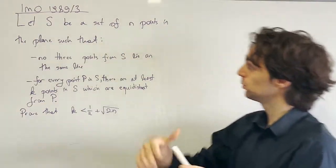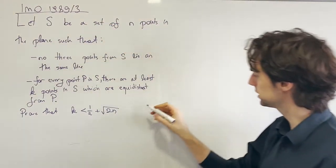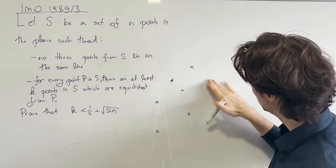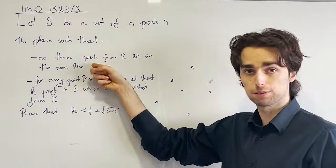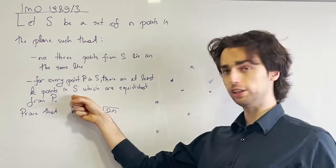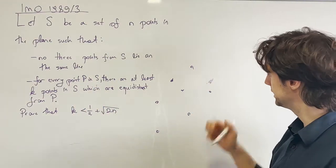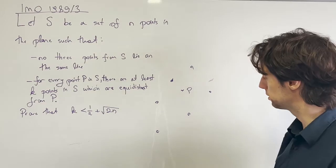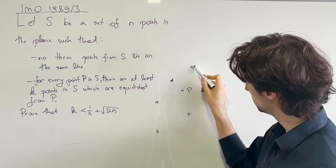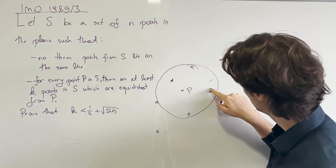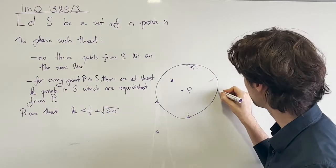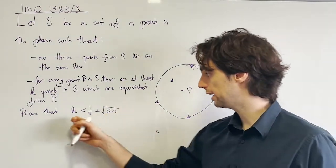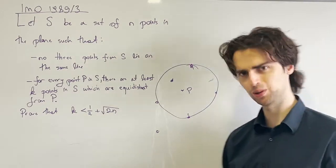So let's look at this problem. We have n points in S, some points in a plane. No three of them are on the same line. That's the first condition. The second condition is actually the interesting one. For every point p in S, there exist at least k points which are equidistant from p. Say k is 4. This is true for every point p. And we must prove that k is less than a half plus the square root of 2n.